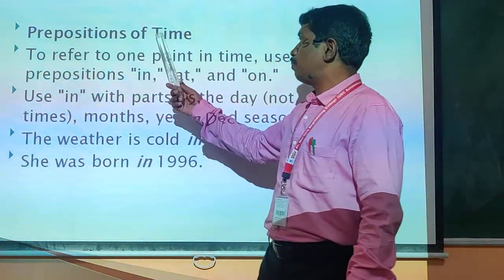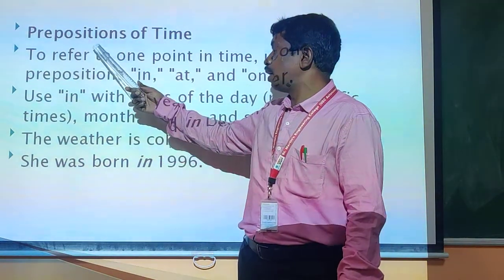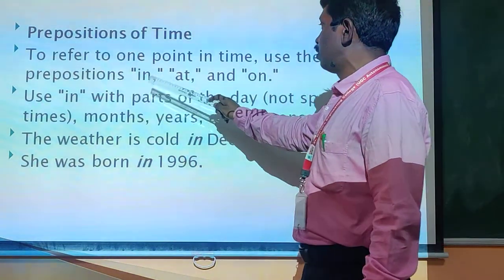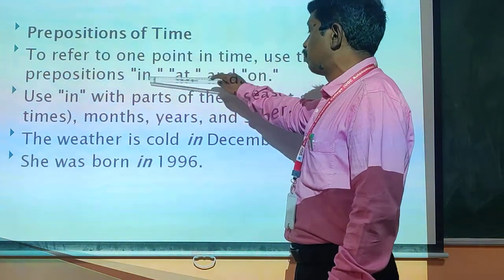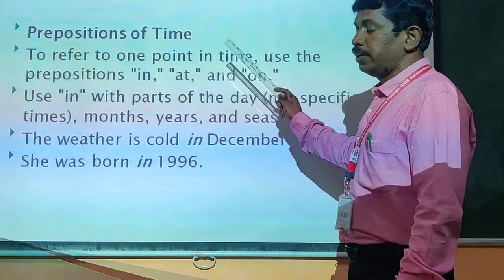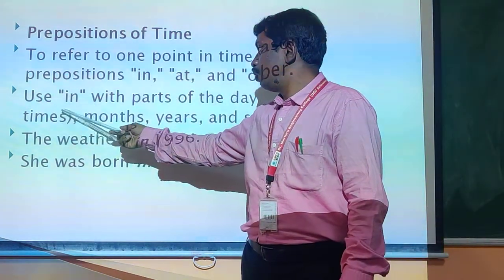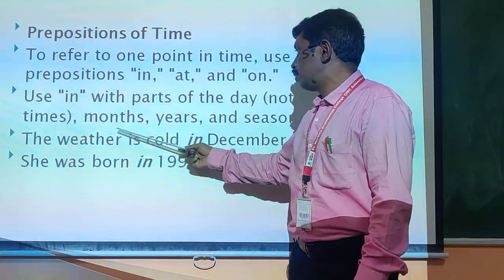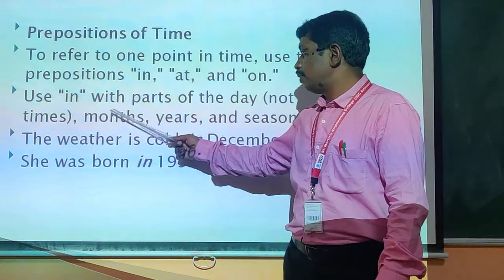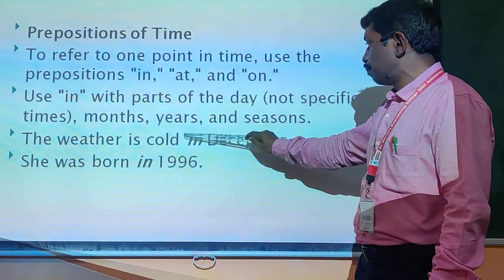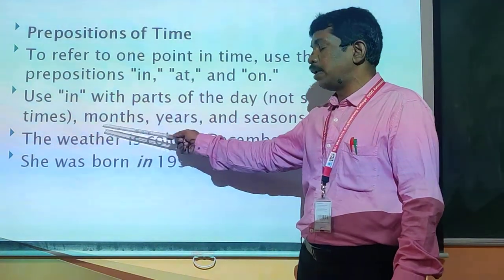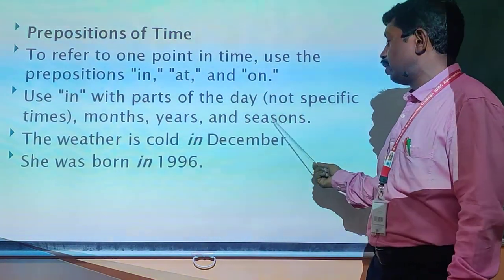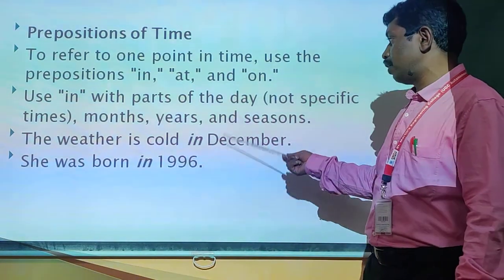The second type is preposition of time. It refers to one point in time. Use the prepositions in, at, and on to show time. Use 'in' with parts of the day or non-specific types: before months, years, and seasons. For example: The weather is cold in December. We use 'in' before months — in December, in November, in January — and before years like in 2021, and seasons like in winter, in summer, in the rainy season.